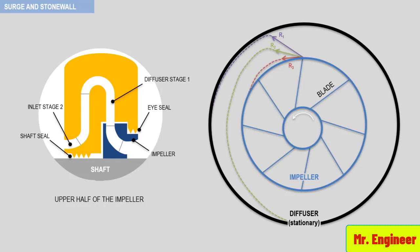This will cause a reduction in the head produced by the impeller. At this moment, the compressor is said to be in a state of flow separation, flow instability, or stall.